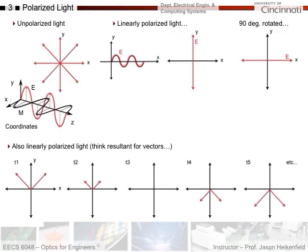We need to revisit polarized light for liquid crystal displays. Here's unpolarized light where the E field points in all different directions, and here's linearly polarized light. The wave is moving along the Z axis — that's a correction on this slide — with Y and X as the transverse axes. Light can be linearly polarized in one direction or rotated 90 degrees. We can also think of linear polarized light as the resultant of two orthogonal components.